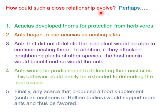Finally, any acacia that produced food supplements such as nectaries or Beltian bodies would support more ants and thus be favored by natural selection. This mutualistic relationship is a very good example of co-evolution.